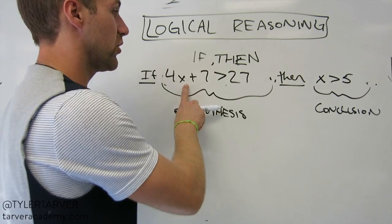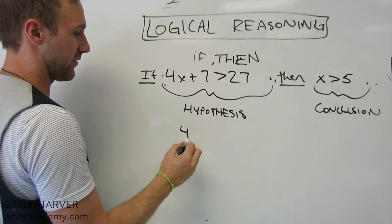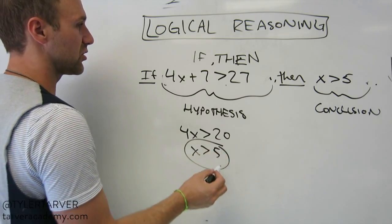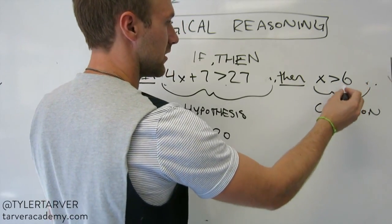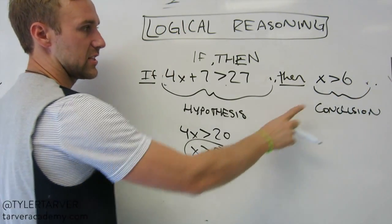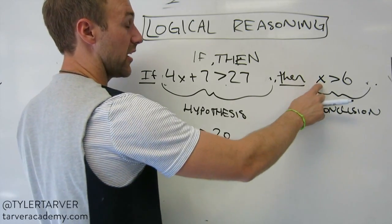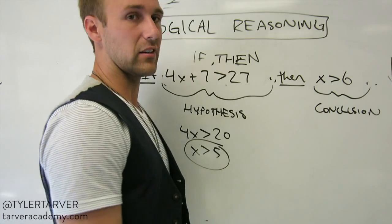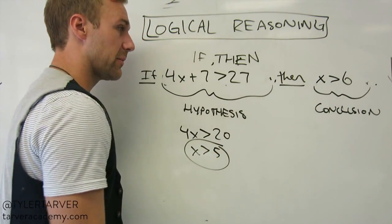Now, if this is true, then this has to be true. Well, let's see. We got 4x plus 7. We subtract 7 from both sides. We got 20 divided by 4. It's 5. Well, if that's true, then that's true. Maybe a better example would have been this. If this is true, does that mean this is true? If our x is greater than 5, does that mean our x has to be greater than 6? Or does that mean x is greater than 6? Not necessarily. It could have been 5 and a half. Okay?